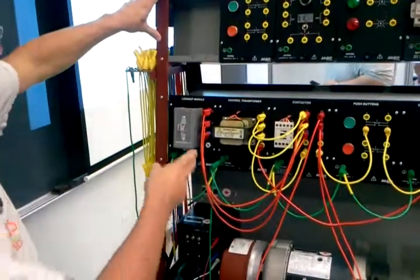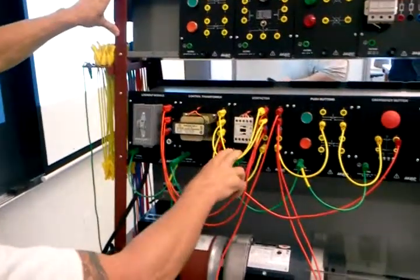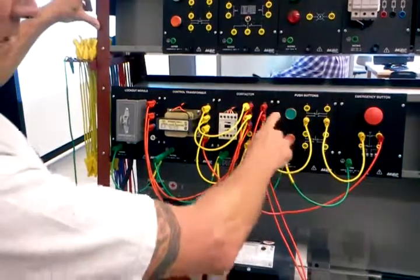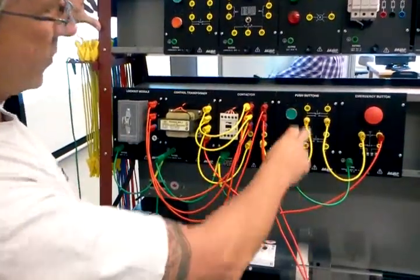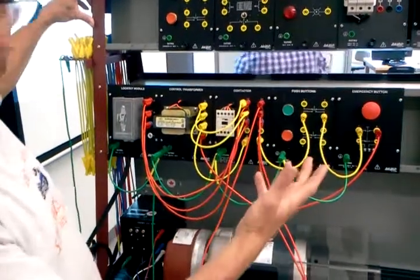We actually have two circuits here: high voltage and a low voltage circuit to control the contactor. The low voltage circuit runs through the push button to the emergency stop, comes back to the contactor to break the contact.